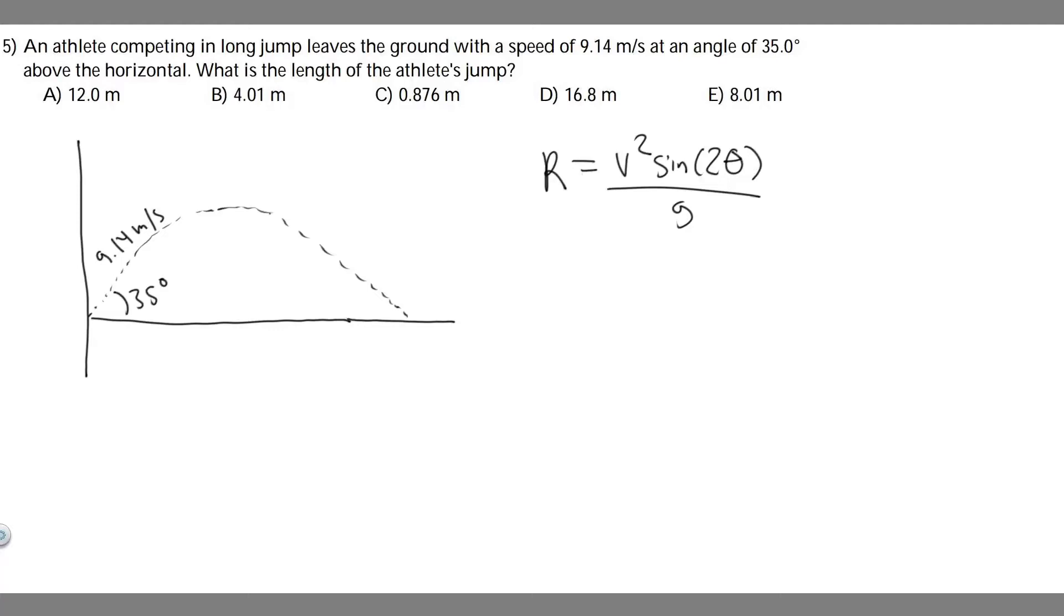In this problem, an athlete competing in a long jump leaves the ground with a speed of 9.14 meters per second at an angle of 35 degrees above the horizontal. What is the length of the athlete's jump?